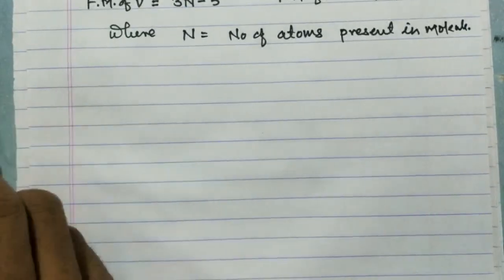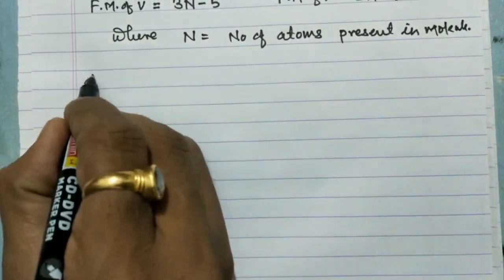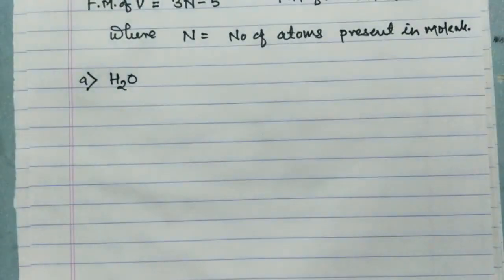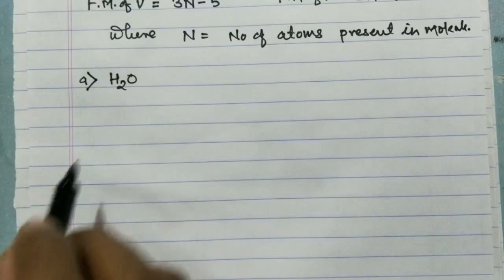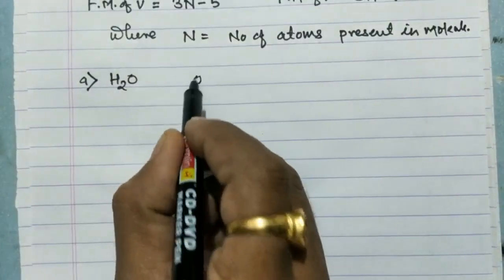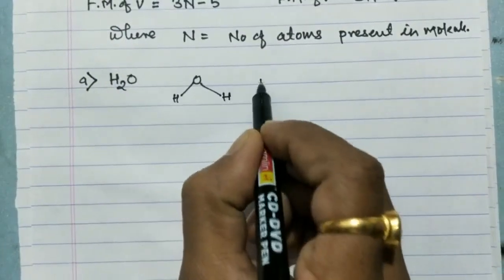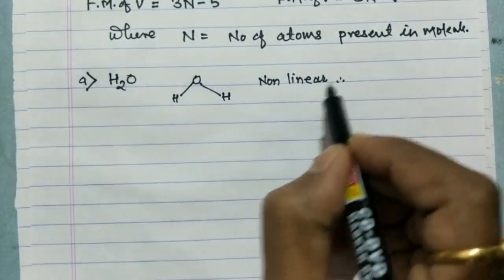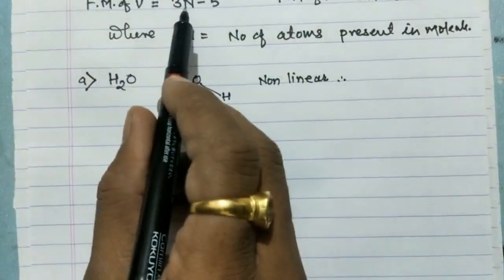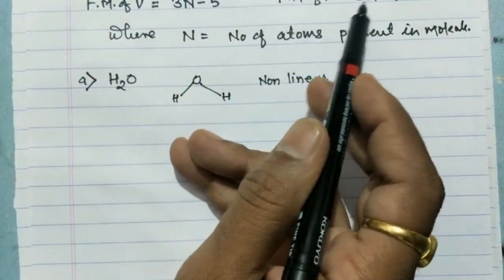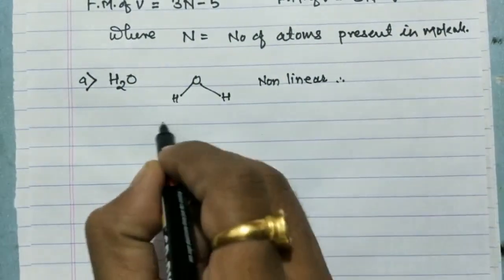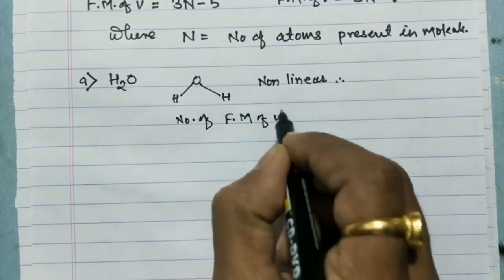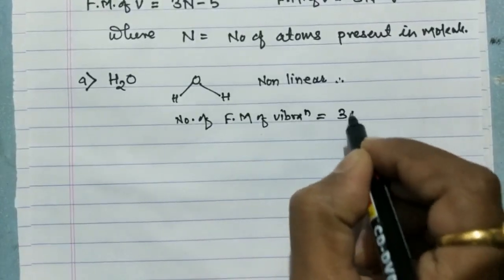Let's find the fundamental modes of vibration for H₂O. The geometry of H₂O is nonlinear, so the formula is 3n − 6. There are 3 atoms present, so 3 × 3 − 6 = 9 − 6 = 3. Therefore, the water molecule has three fundamental modes of vibration.